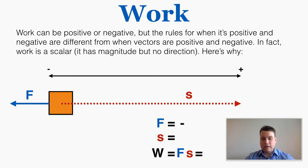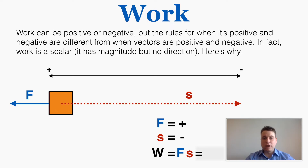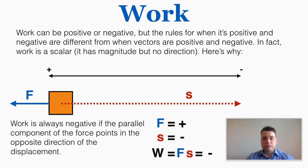For example, if the force points in the negative direction and the displacement points in the positive direction, the work is negative. And if we switch these around — force positive, displacement negative — the work is still negative. So what determines the sign of work is not the direction of just the force or just the displacement, but how those two relate to each other. Work is always negative if the parallel component of the force points in the opposite direction of the displacement.